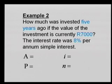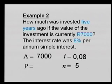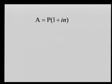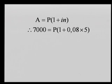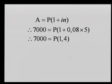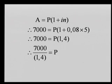It's five years given. Seven thousand is A, the current amount. I is 0.08, and we need P. Using the formula with substitution: 7,000 equals P times (1 plus 0.08 times 5). Work out the brackets, then divide by 1.4 — and P equals five thousand Rand. Five years ago you invested five thousand Rand and it grew to seven thousand Rand at that interest rate. You must keep it as a decimal — otherwise you'd be in a bank making everyone multi-millionaires. Always work with the decimal version.